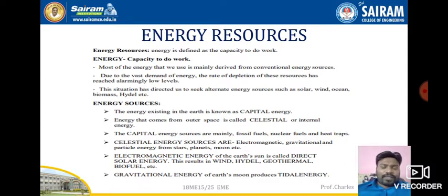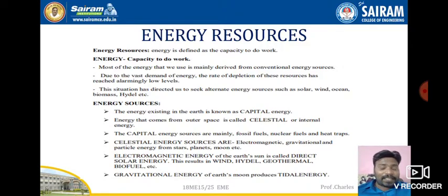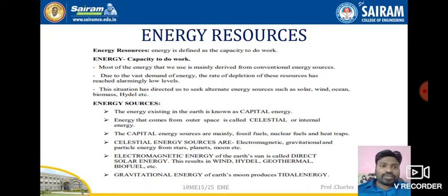Some parameters used in energy resources: energy depends on availability or where it comes from. Energy existing in the earth is known as capital energy — some amount of energy available from within the earth itself. Energy coming from outer space is called celestial energy. Examples of capital energy are fossil fuels, nuclear fuels, and heat traps.